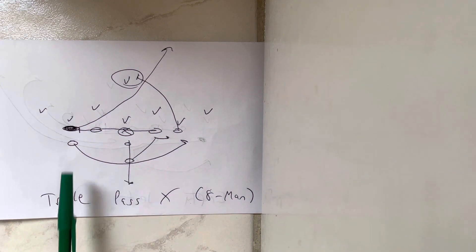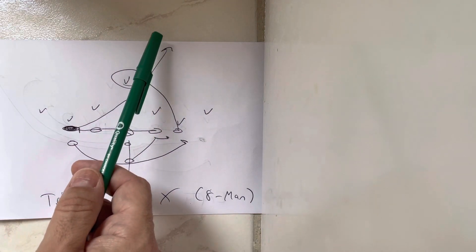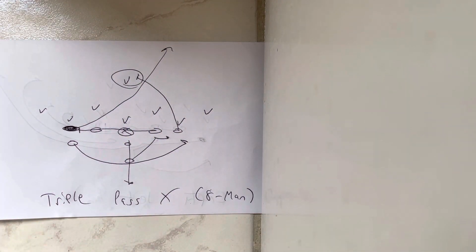Quarterback is going to five-step drop. As soon as the end clears up the field, he's going to throw the ball six inches in front of the inside of the left end for the touchdown. That's how you throw a triple pass X. And there you go.